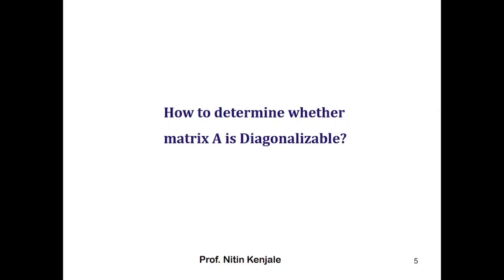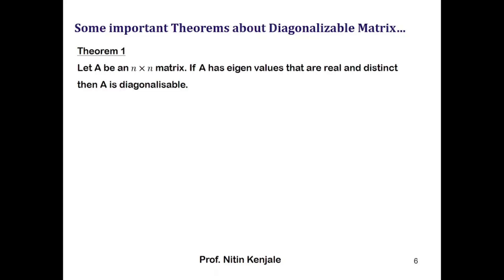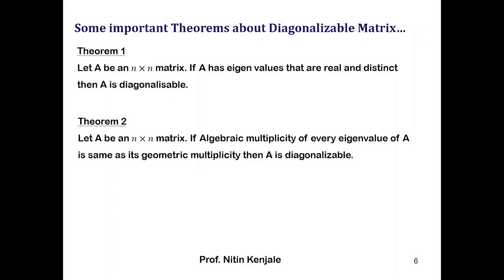Now we see how to determine whether matrix A is diagonalizable or not. Theorem one says that if A is an n×n matrix and if A has eigenvalues that are all real and distinct — meaning none of the eigenvalues is repeated — then A is always diagonalizable. Whenever A has distinct real eigenvalues, A is diagonalizable and can be written as P D P-inverse.